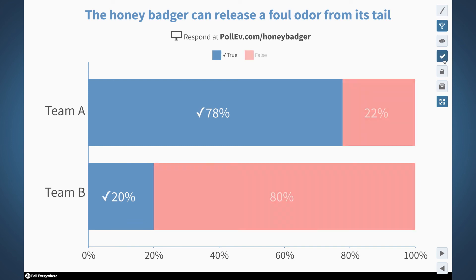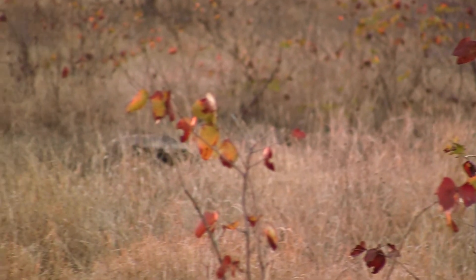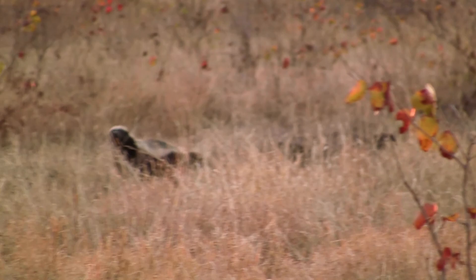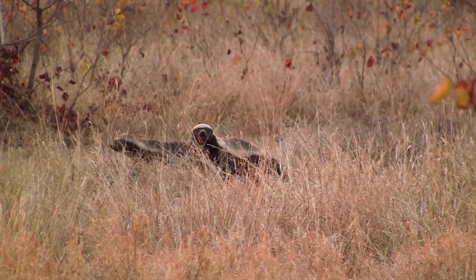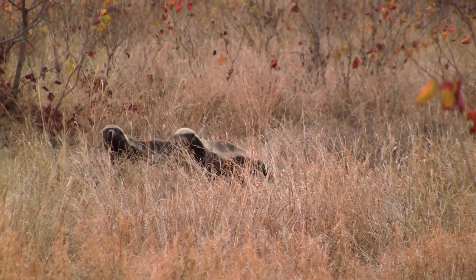Oh, and I almost forgot — the correct answer is true. The honey badger can, in fact, release a foul odor from its tail. So if you see one, don't startle it. Unless you want a smelly surprise.